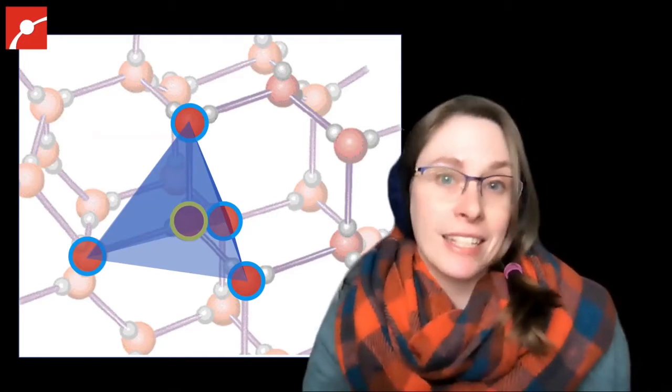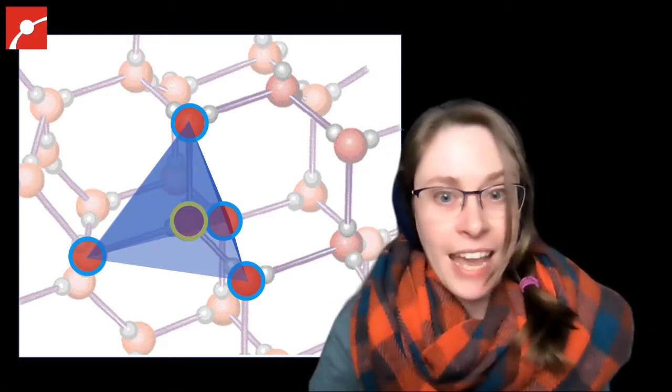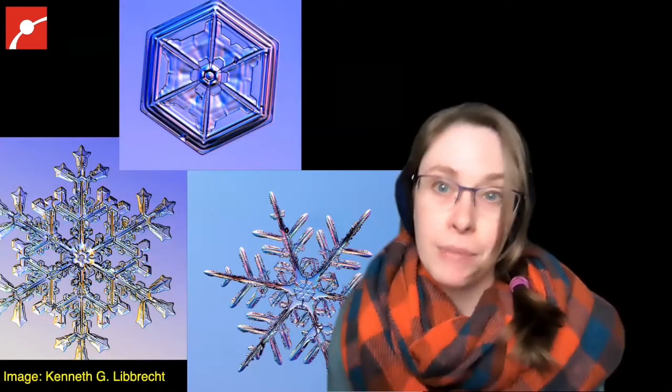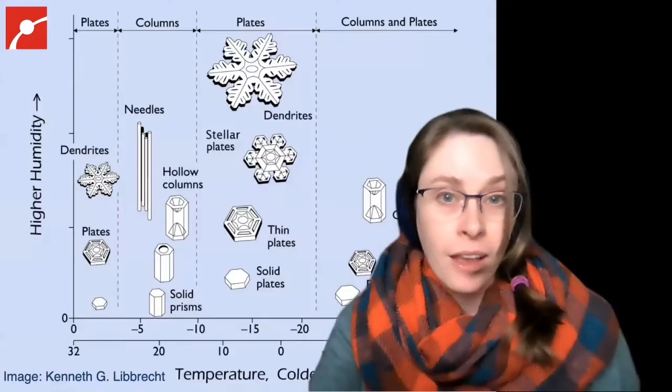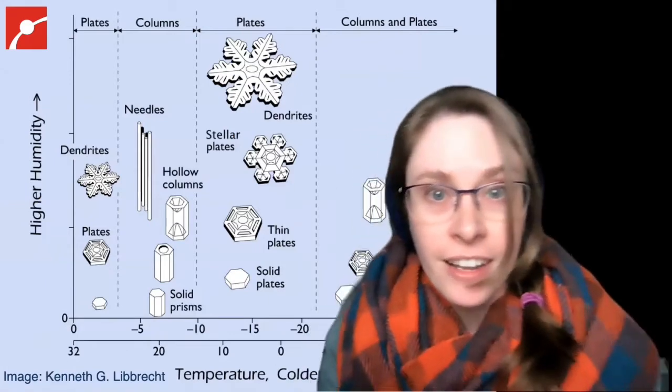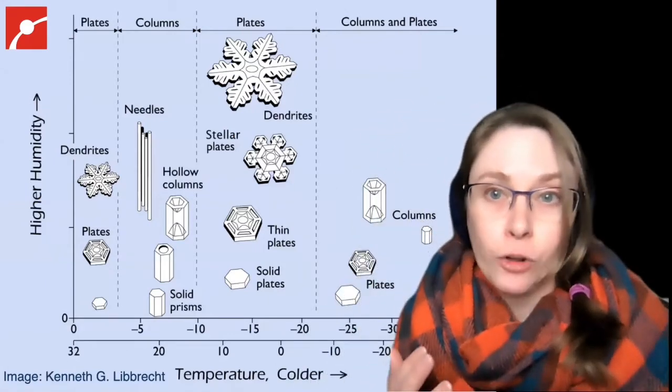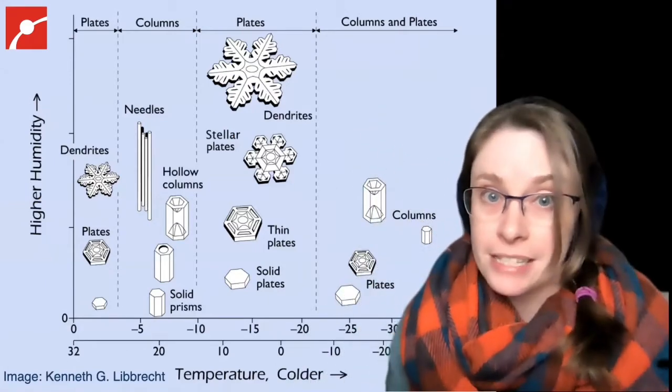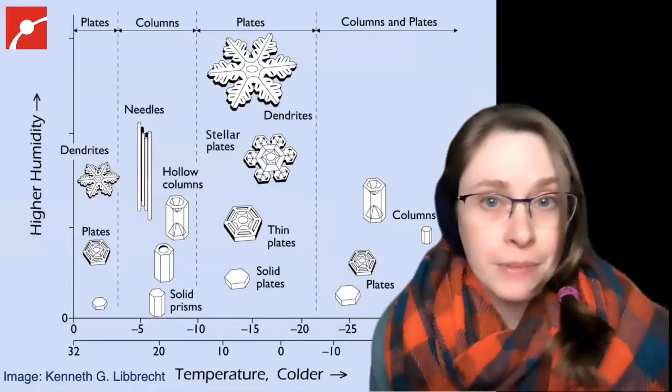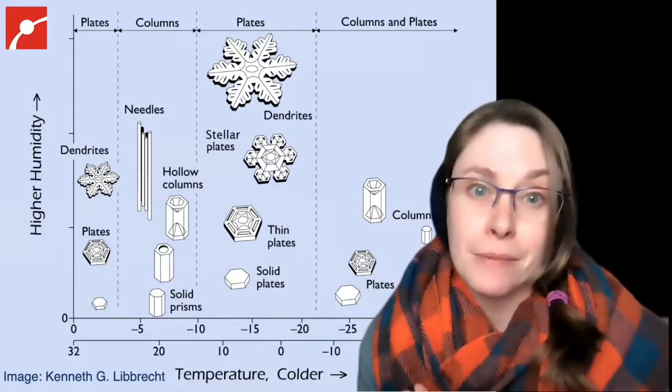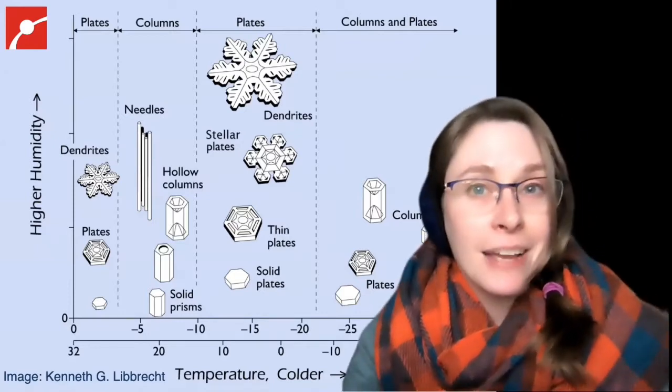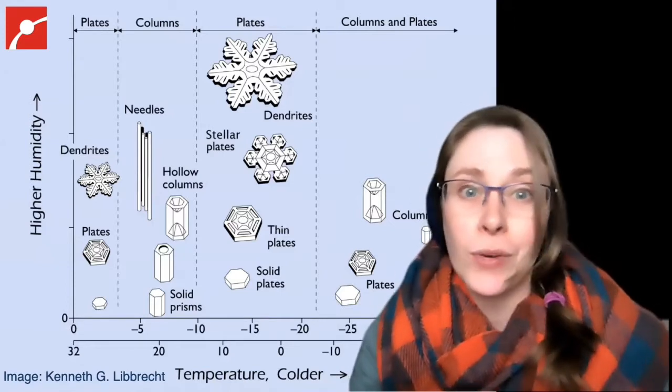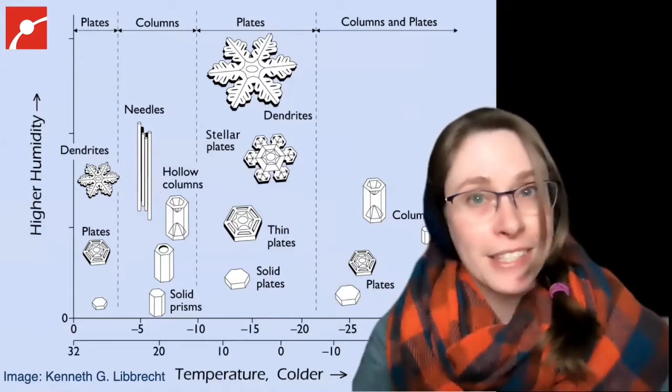Snowflakes are always six-sided because that's what quantum mechanics tells us about how H2O molecules arrange themselves, but they can actually come in a whole range of variations depending on the temperature and the humidity. When the air is drier, you tend to get hexagonal plates or even solid prisms, and the beautiful star-shaped snowflakes tend to form when it's a bit more humid out. So the next time you're out in the snow, take a closer look at what's falling from the sky. You might be surprised!